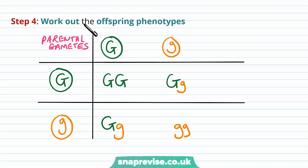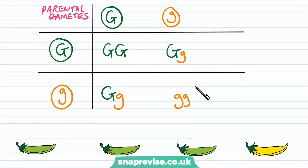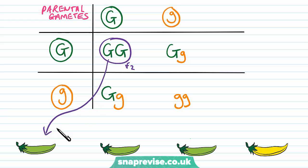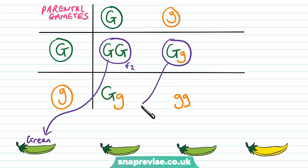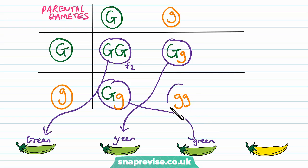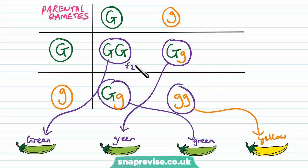From what we've found we can work out the offspring's phenotypes. The first F2 offspring has double dominant for green, so it would always be green. The next two also each have a dominant gene for green, so they would also be green. However, the last one only has recessive genes and therefore it will be yellow. So in the F2 generation, there's a three-quarter chance of them being green but only a 25% chance of them being yellow.